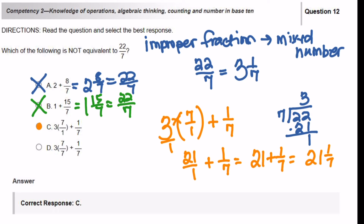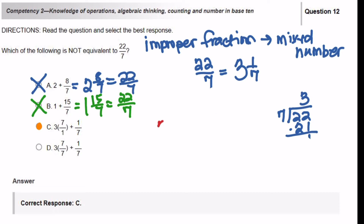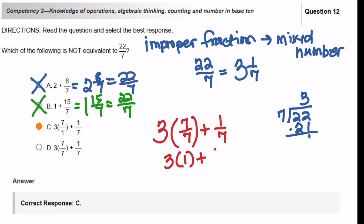But let's do ourselves due justice and do answer choice D: 3 times 7 over 7 plus 1 over 7. This would be 3 times 1 plus 1 over 7, which equals 3 plus 1 over 7, which equals 3 and 1 over 7. So this is equivalent, so we don't want that answer.